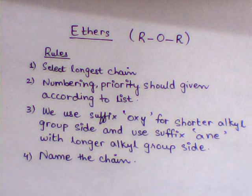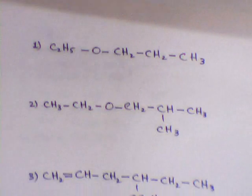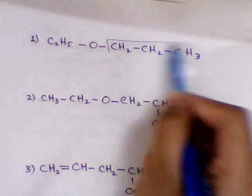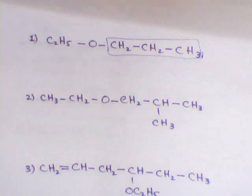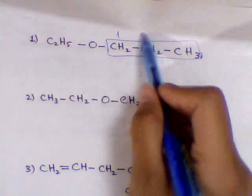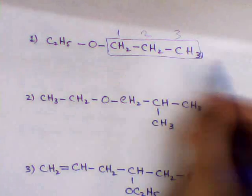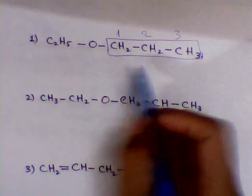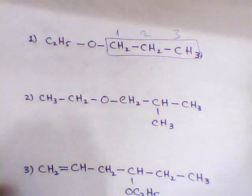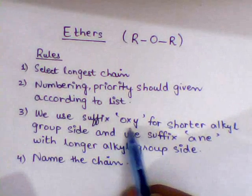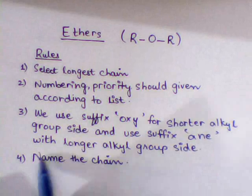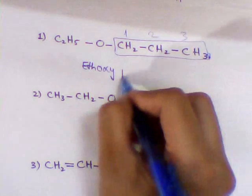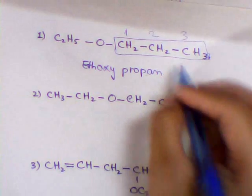Let's practice with ether compounds. In example 1, rule number 1 is to select the longest chain. Remember, 'oxy' should be written first, then the 'ane' part. According to rule 3, we use suffix 'oxy' for the shorter alkyl group and suffix 'ane' for the longer alkyl group. This is the shorter alkyl group, so it gets 'ethoxy'. For the longer alkyl group we use 'ane'. So the name is ethoxypropane.